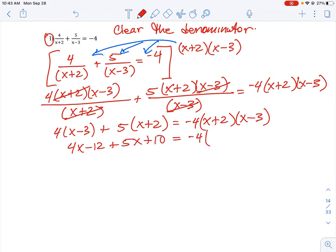Now let's get rid of these two brackets. So this is going to be x squared, oops, x squared. So we have 4x squared minus 3x plus 2x minus 6. Okay, and then if we collect like terms, we're going to have 9x minus 2 is equal to negative 4x squared plus 12x minus 8x plus 24.